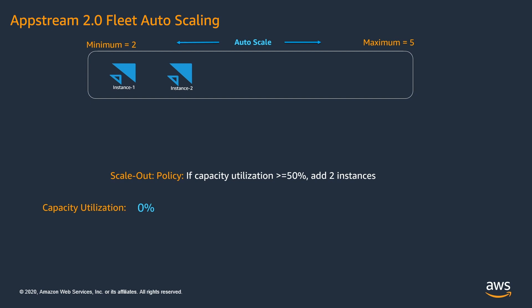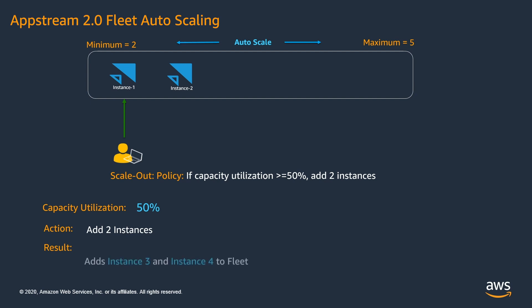Let's say one user got connected to the AppStream session. Since 1 out of 2 instances are being utilized, the new capacity utilization is at 50%. Since our scale-out policy says if the capacity utilization is greater than or equal to 50% then add 2 instances, in this case 2 new streaming instances — instance 3 and instance 4 — will be added to the fleet. You can see the new streaming instances being added to the fleet.